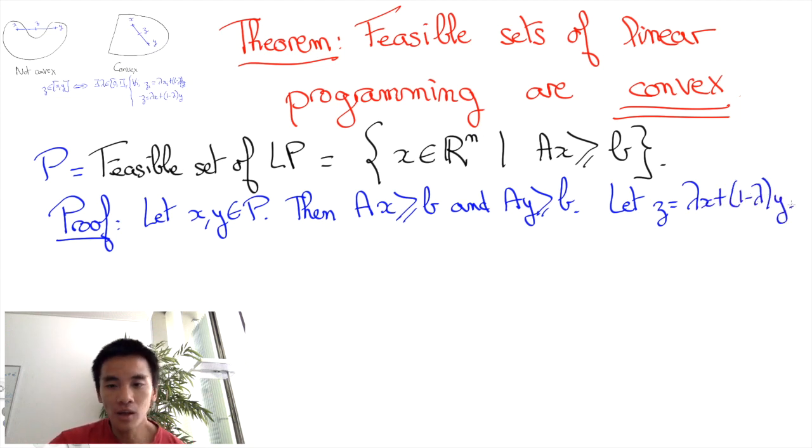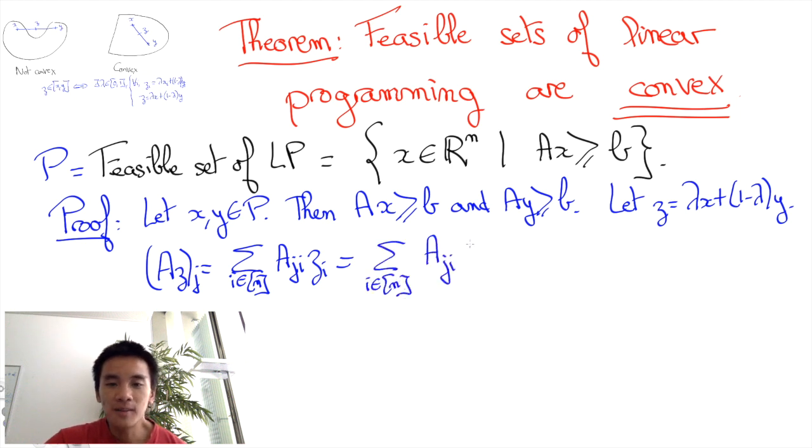This means that for all i in 1 to N, z_i equals lambda x_i plus (1 minus lambda) y_i. We have the jth coordinate of AZ equals the sum for all i's of A_ji z_i. And this is equal to the sum for all i's of A_ji times lambda x_i plus (1 minus lambda) y_i.